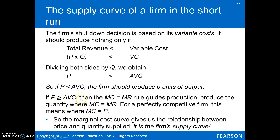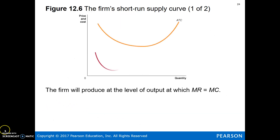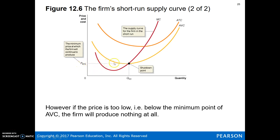As long as price is above average variable cost, the rule we've been looking at applies — that's what the firm is going to do. If price falls below average variable cost, the firm chooses to shut down in the short run. If this condition holds, the firm will produce, and the marginal cost curve above this point is the firm's supply curve. Graphically: if the price falls below the minimum average variable cost, the firm shuts down. Any price below average total cost means the firm takes a loss, but it continues to produce so long as price is at least above average variable cost. If it's below that, the firm shuts down and does not produce in the short run.